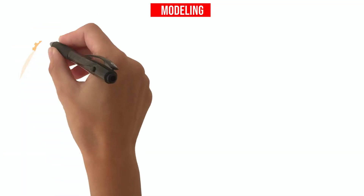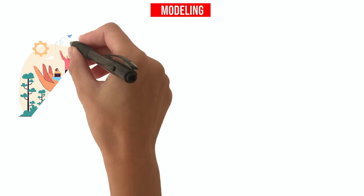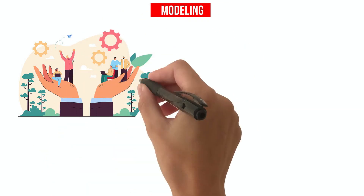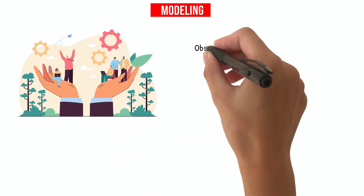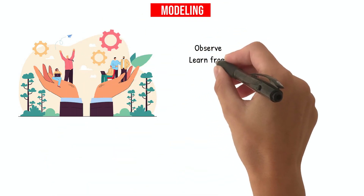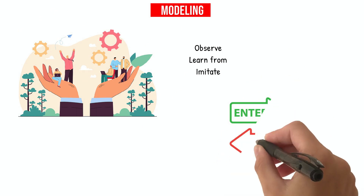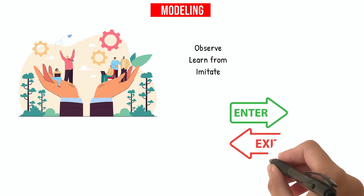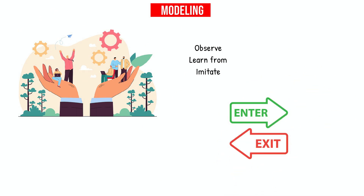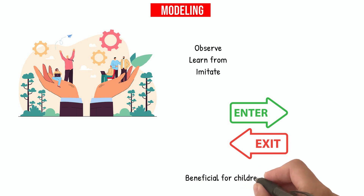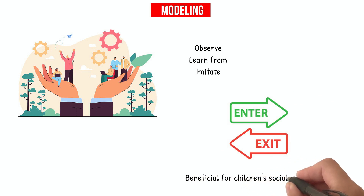Modeling: Adults can model various social behaviors for young children to observe, learn from, and imitate. For example, they can model how to appropriately enter or exit a social situation, which can be beneficial for children's social development.